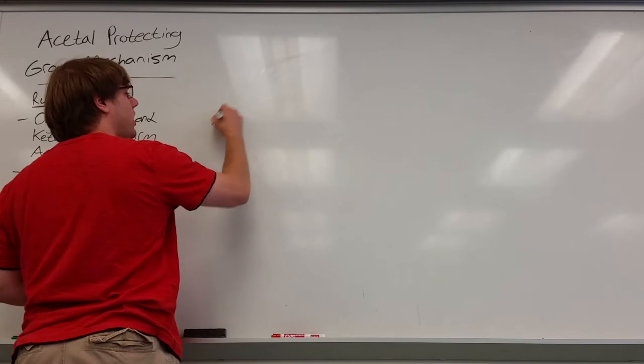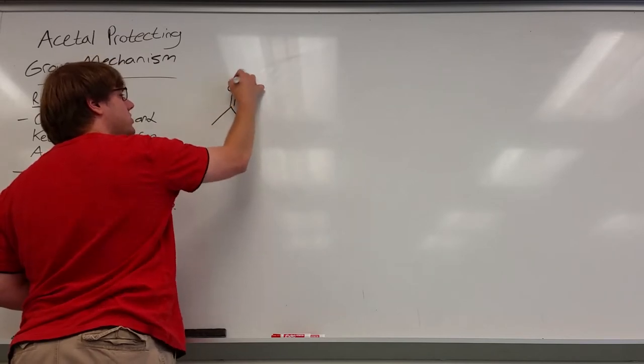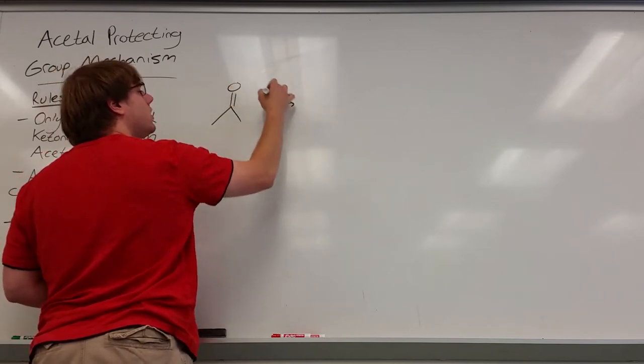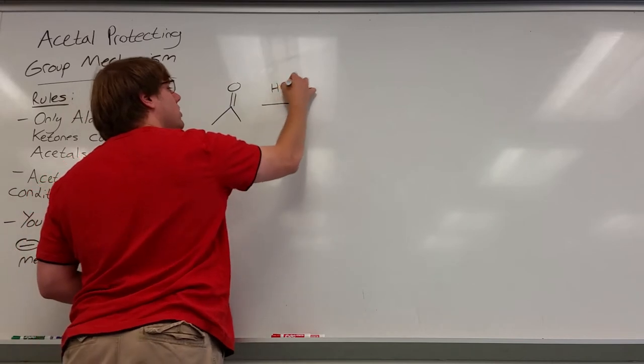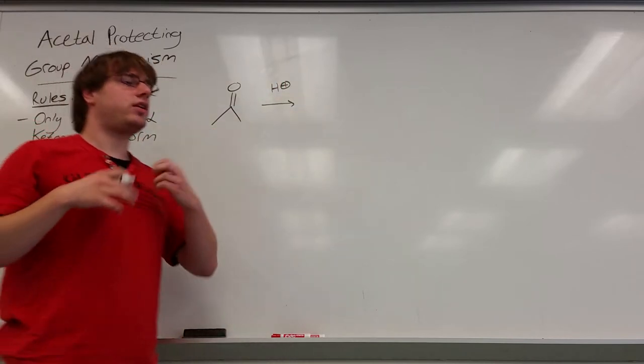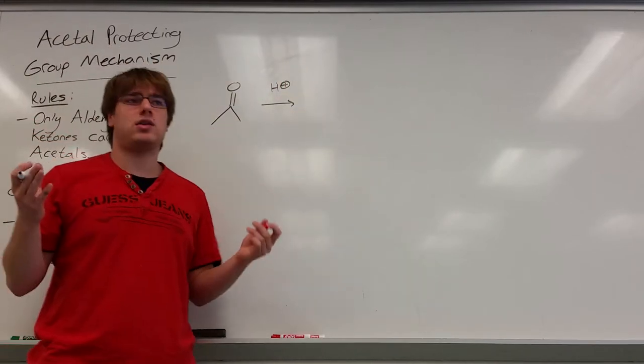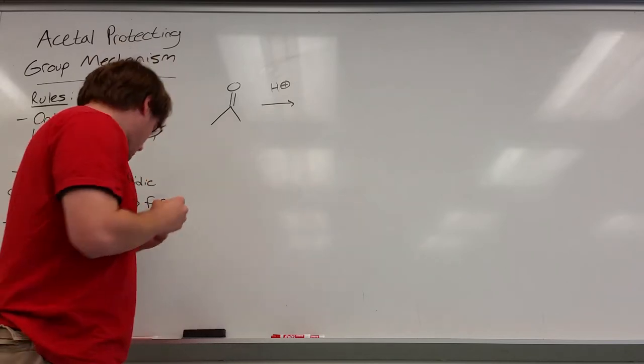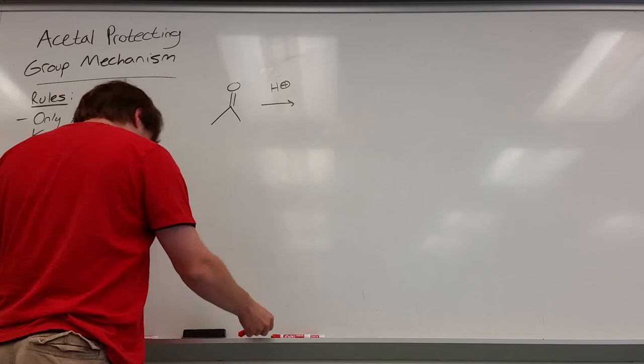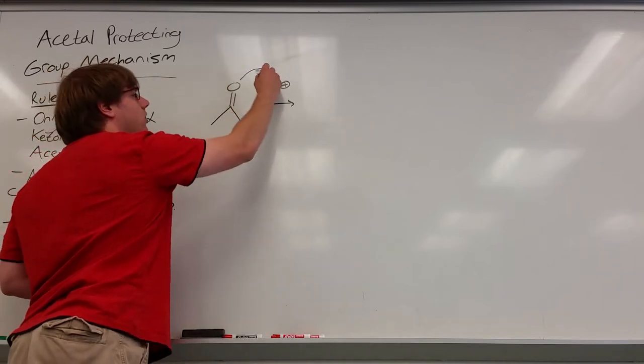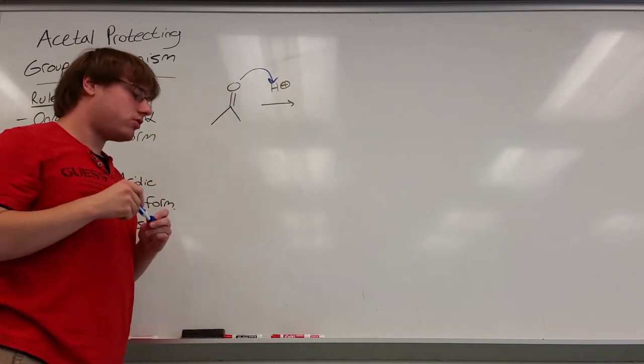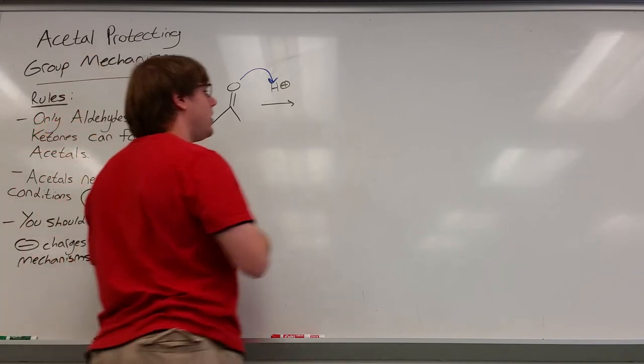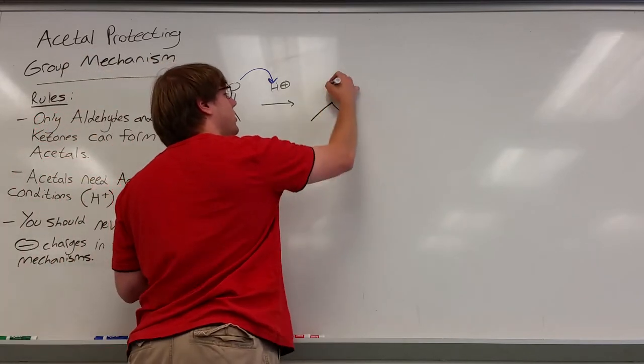So we're going to start with our aldehyde or our ketone. I'm going to just stick to a ketone for this one. And we have H+. Since we have H+ conditions, and when we're in acidic conditions, the first step of any mechanism, if you see H+ or some good acid, is always to protonate. And the only thing floating around that could grab that proton right now is our double bond O. So that double bond O grabs the hydrogen and becomes double bond OH positive.